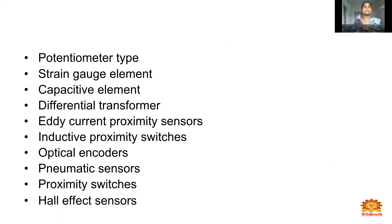What are the types of resistive transducers used? First one is the potentiometer, strain gauge, capacitive element, differential transformer, eddy current proximity sensor, inductive proximity switches, optical encoders, pneumatic sensors, proximity switches, and Hall-effect sensors.